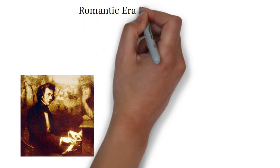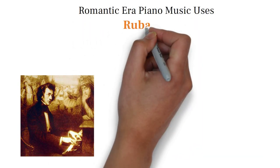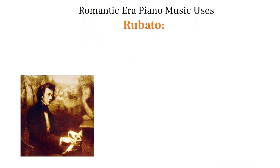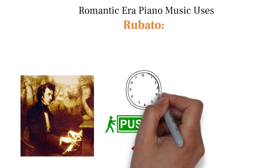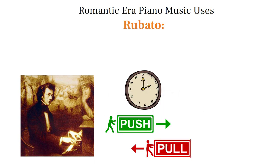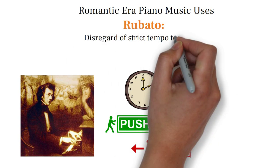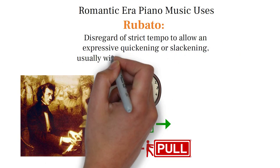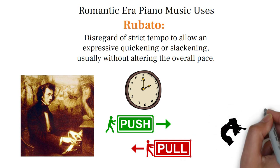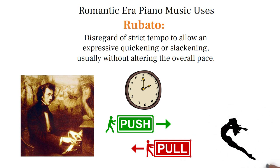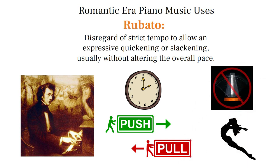The first thing to mention is that Scriabin began writing in the Romantic era, when it was common to push and pull the tempo back and forth. This is the first contributing factor to what makes his piano music sound so free and not rigidly tied to a steady beat.